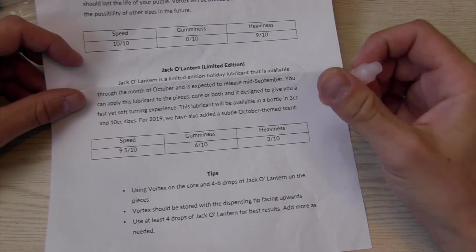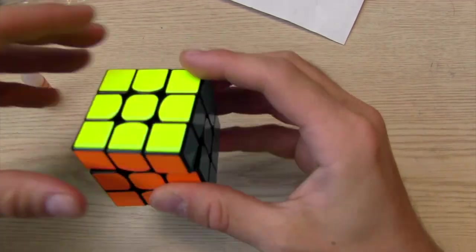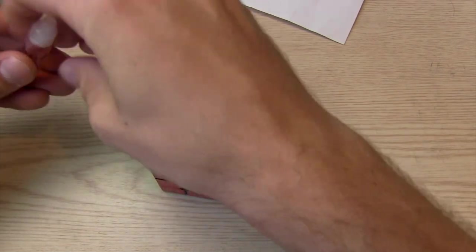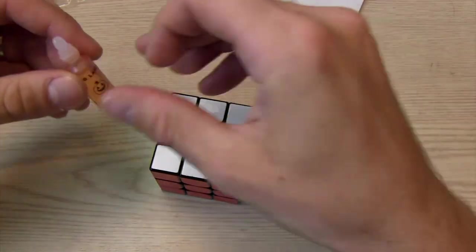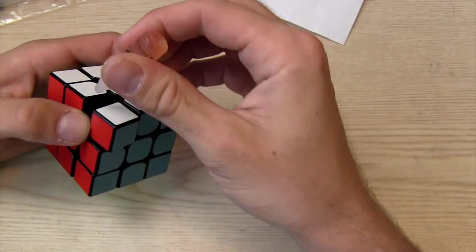So first, look at this. Use at least four drops of jack-o'-lantern for best results. Add more if needed. And we'll look at Vortex in a second, which is the other one. So, this is my regular Valk. I kind of just haven't used it in a while. It's the one that I fixed that had that broken piece. I made a video on that. So if you do have a Valk with broken piece, this has been working well for a while.